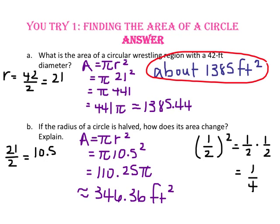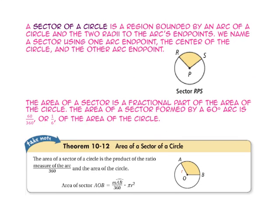So the new area is one-fourth the size of the original area. A sector of a circle is a region bounded by an arc and the two radii to the arc's endpoints. We name a sector using one arc endpoint, the center of the circle, and the other arc endpoint — so this is sector RPS or sector SPR.